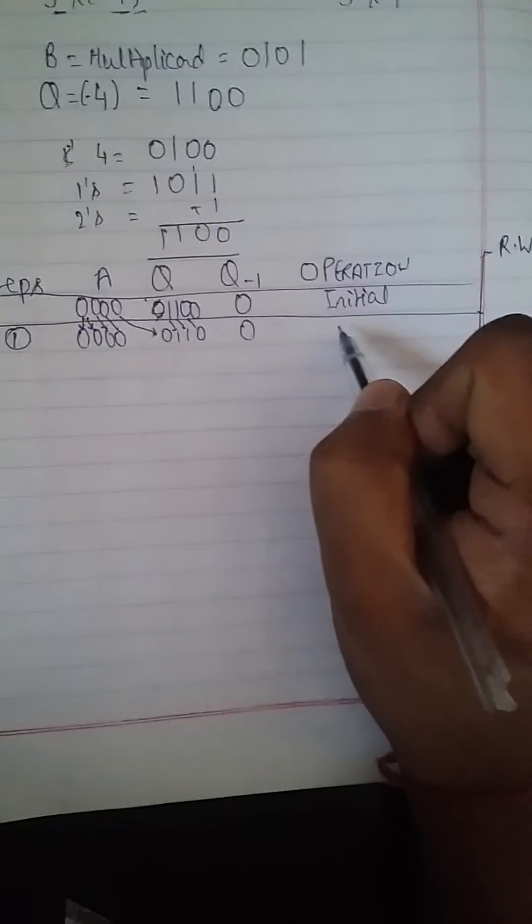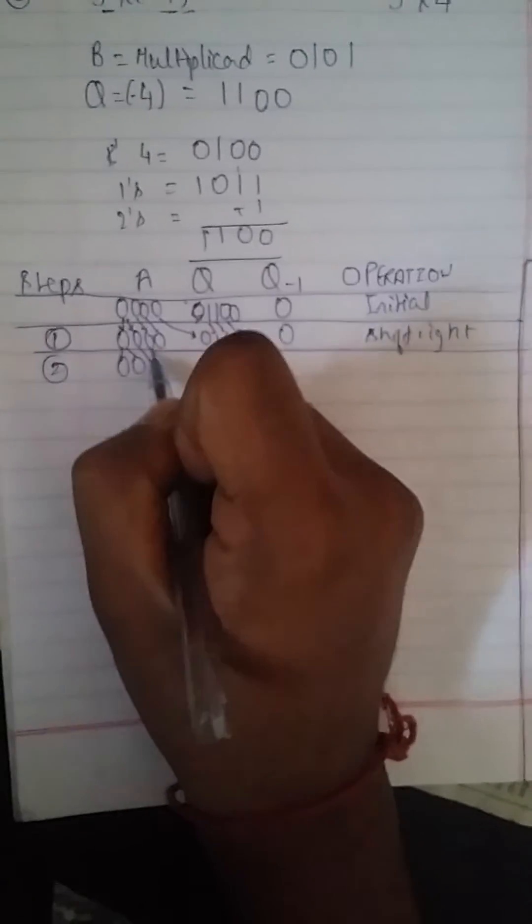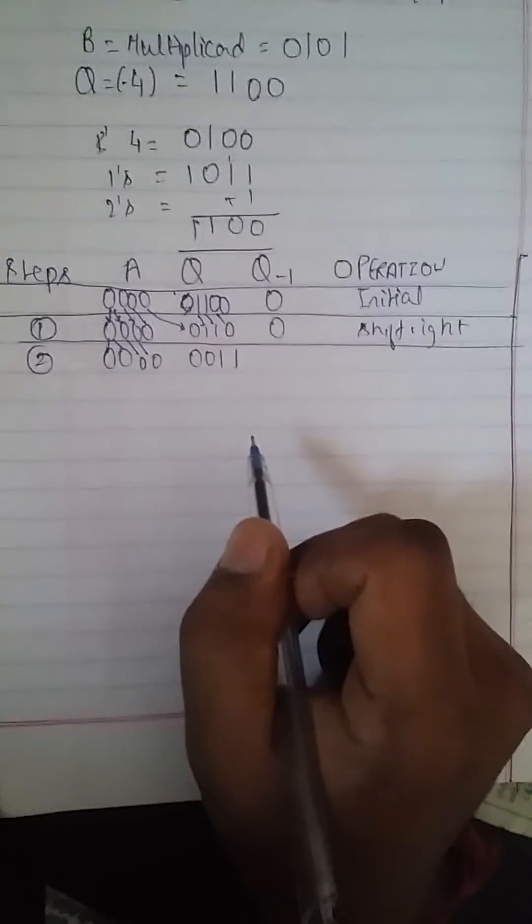In the first step, we just shift towards the right, so the operation is 'shift right'. In the second step, A becomes 0, Q becomes 0011, and the operation is again 'shift right'.